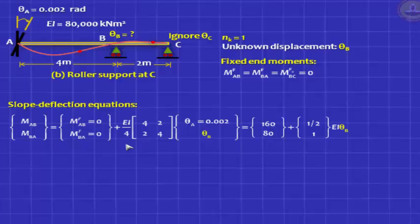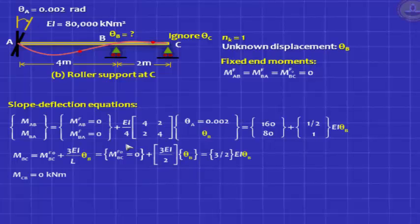Conventional slope deflection equation MAB is equal to MFAB plus 4 EI by L into theta A plus 2 EI by L into theta B. MBA is MFBA plus 2 EI by L into theta A plus 4 EI by L into theta B. Plug in those values, you have got an unknown theta B. There is no theta C coming in anyway because AB does not have theta C. Now, when you write the equation for MBC, you take advantage of the fact that C is hinged. You invoke the modified slope deflection equation and it should be written like this. MBC is MF naught BC plus 3 EI by L into theta B. MCB is known to be 0. So MF BC is 0. So it is MBC is simply 3 by 2 into EI theta B. That is it.